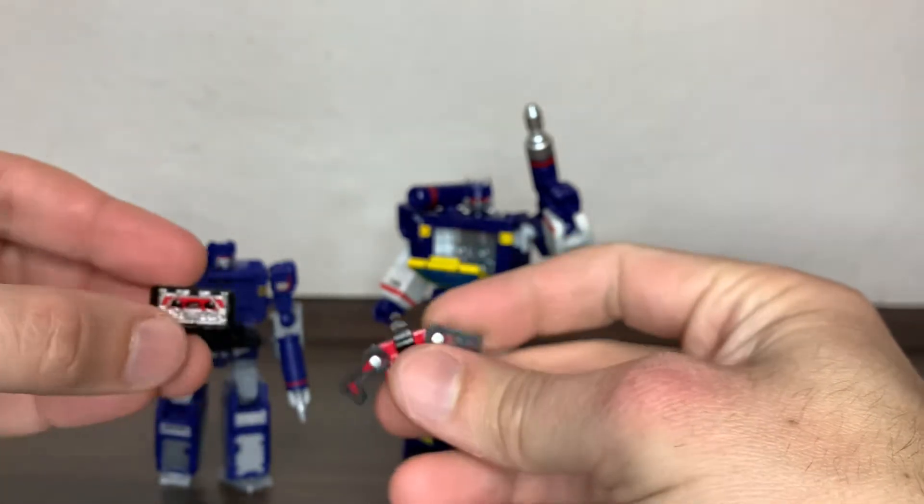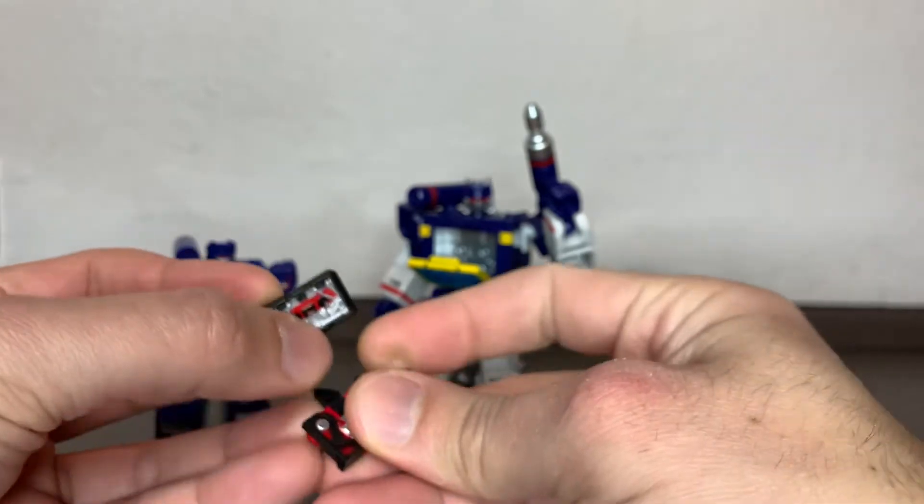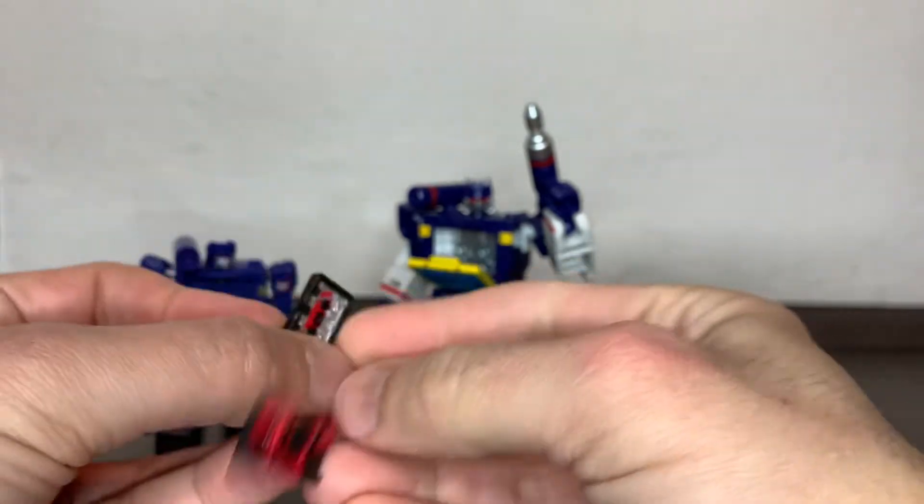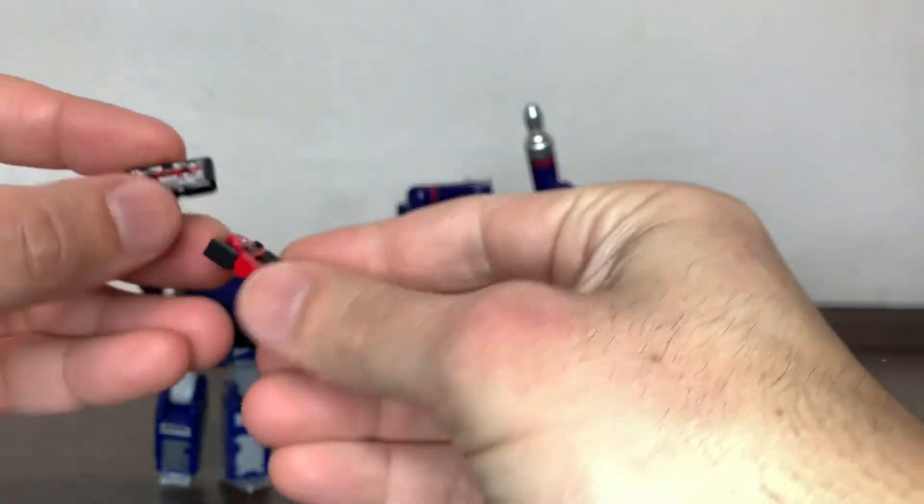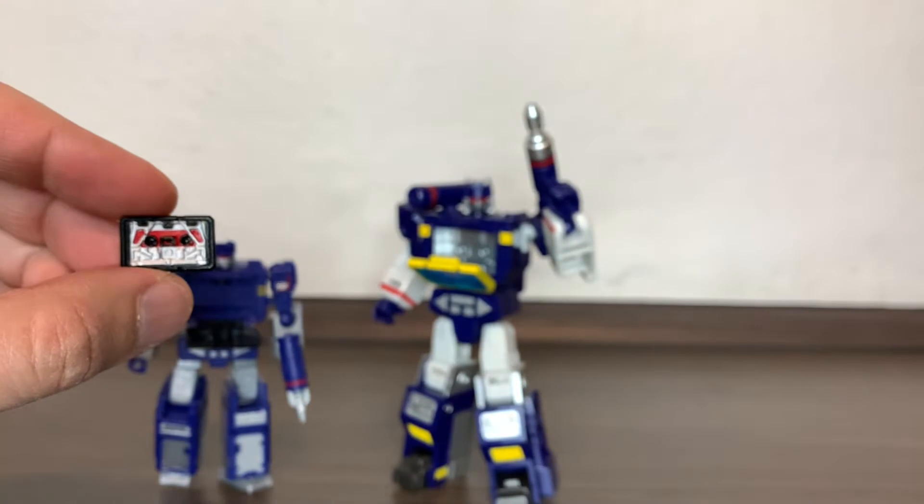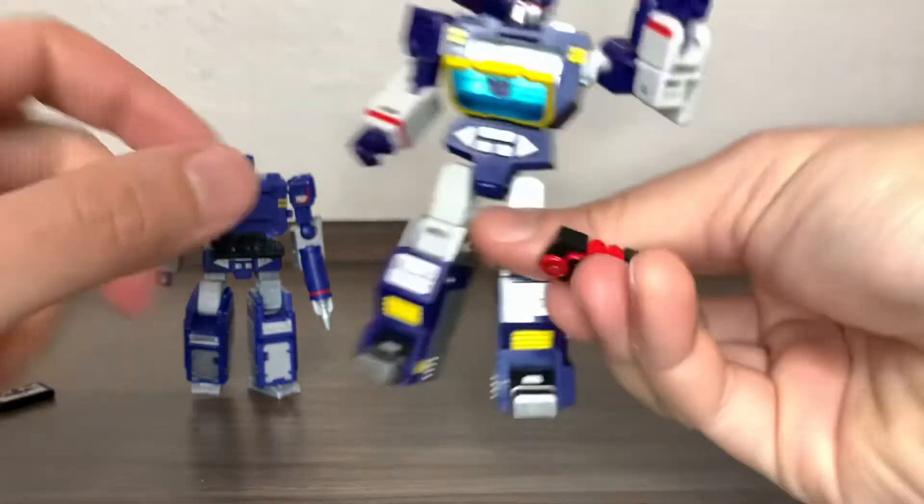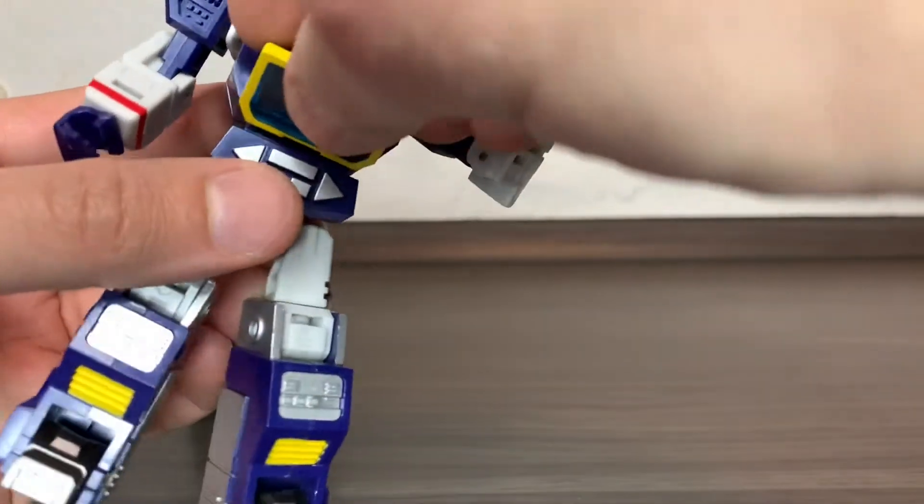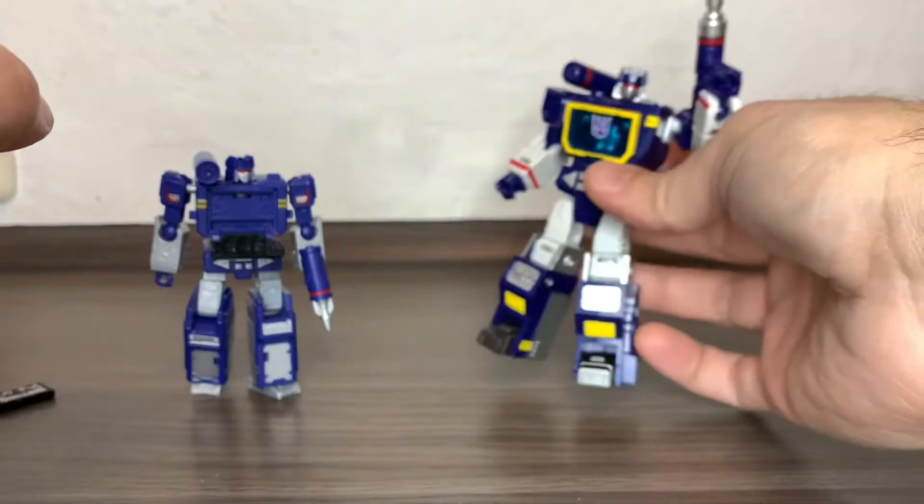As it's a bit larger, the Laserbeak it comes with actually is able to transform—it's a very simple one. You have the two cassette tapes, they're different but kind of similar. I think this core class is like a response to all the legends scale that so many third-party companies have been making.